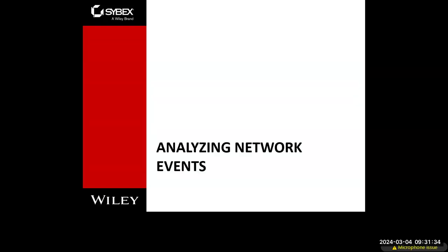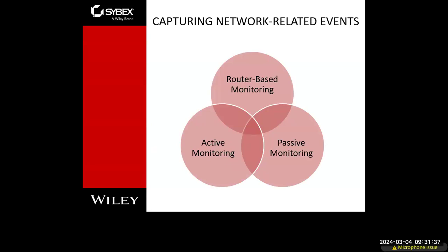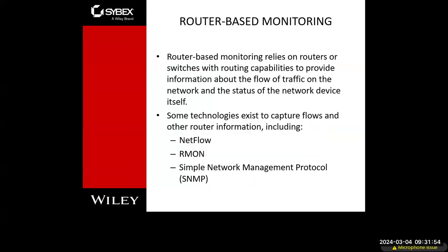The first step is going to be analyzing network events. This is all about monitoring your network and your systems. This comes from routers, security appliances, log files. They're broken down into two main categories of active monitoring and passive monitoring, where router-based monitoring basically relies on inputs from network infrastructure — routers, switches, security appliances such as a firewall or intrusion prevention system. They collect logs from NetFlow, RMON or remote monitoring, simple network management protocol, and syslog data.